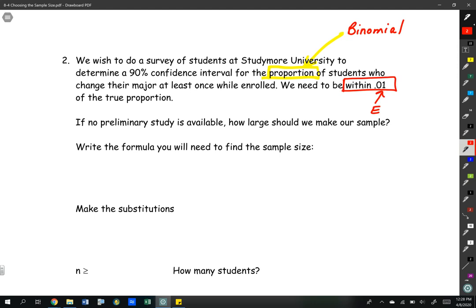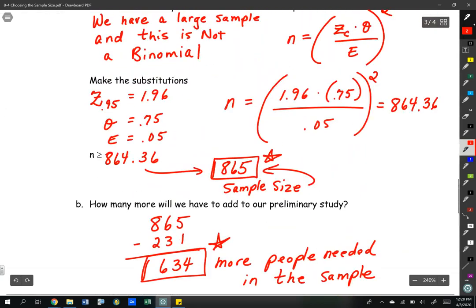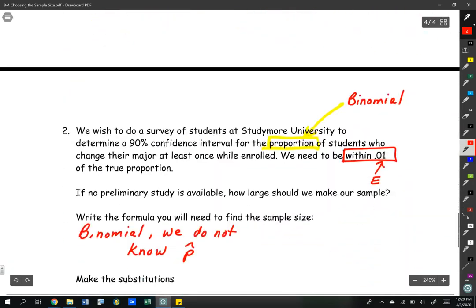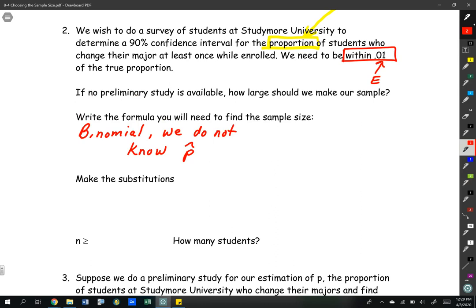No preliminary study, so we do not know p-hat. This is a binomial. We don't know p-hat, so we're going to be using that formula for this question. We're going to write that down. Always want to write our formula down first before we fill it in. It's good practice, one of the best practices you can do in order to eliminate making mistakes.